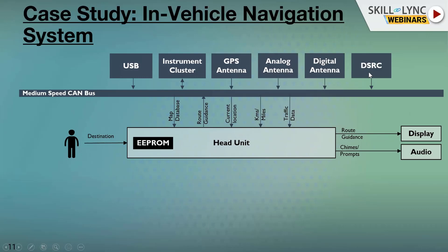DSRC is basically V2X — vehicle-to-vehicle or infrastructure-to-vehicle communication. Japan uses this via highway beacons. As your vehicle passes underneath, it beams data to your vehicle telling you if the route has dense traffic, and it even suggests alternate routes.